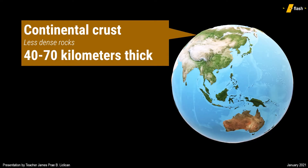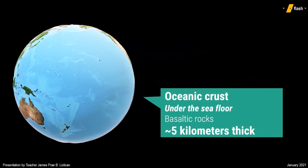The continental crust is about 30% of the Earth's surface. This type of crust is made up of dense granitic rock. Its thickness varies from 40 km to 70 km thick, where most of the continents and terrestrial life thrives. While most of the Earth's crust is submerged in the seafloor, most of it is classified as oceanic crust. Oceanic crust is made up of basaltic rocks, which are denser than the granitic rocks of continental crust.